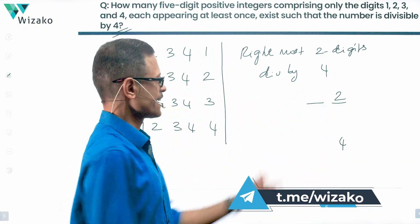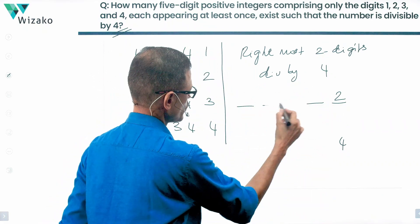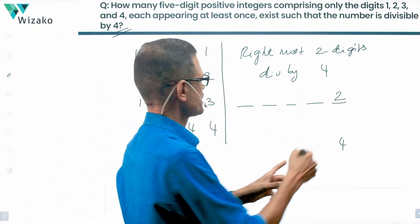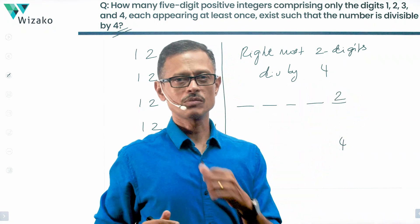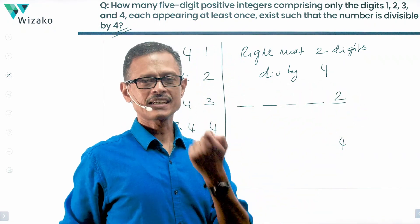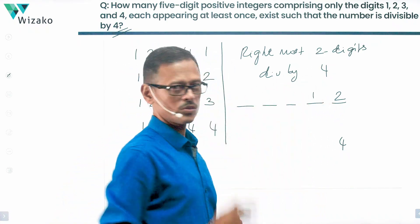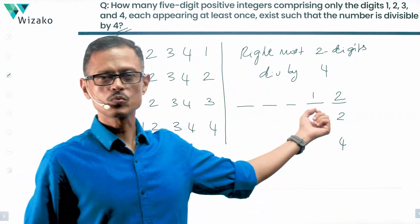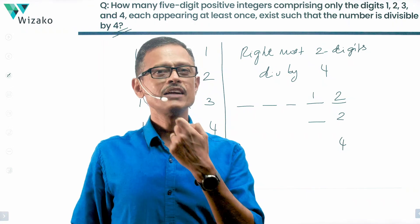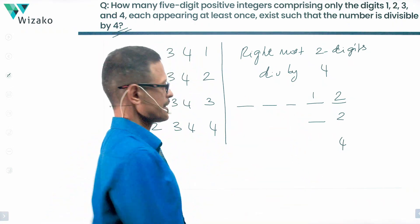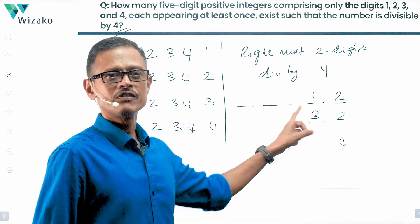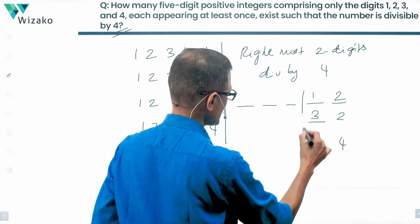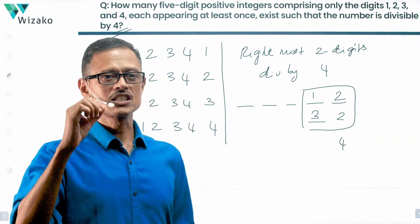So the unit digit is 2 or the unit digit is 4. Now, what possibilities can the 10's place have such that the rightmost 2 digits will be divisible by 4? If it's a 1, will it make the cut? Yes — 12 is divisible by 4, which is a possibility. If it's a 2, will it make the cut? No — 22 is not divisible by 4. If it's a 3 in the 10's place, will it make the cut? Yes — 32 is divisible by 4. If it's a 4, will it make sense? No. So the last 2 digits, if they are 12 or 32, then the number is divisible by 4.